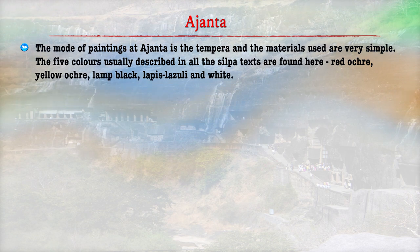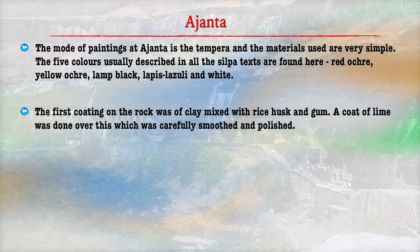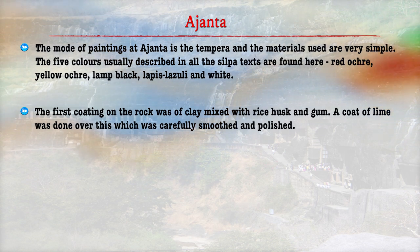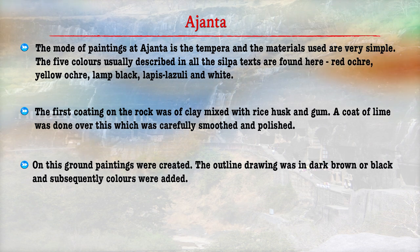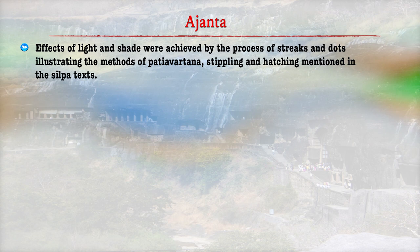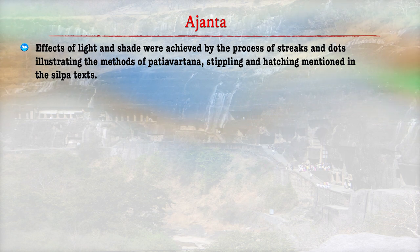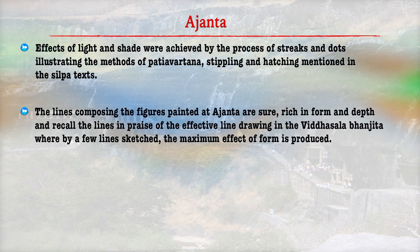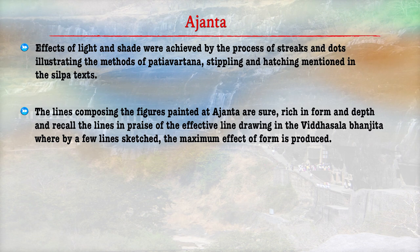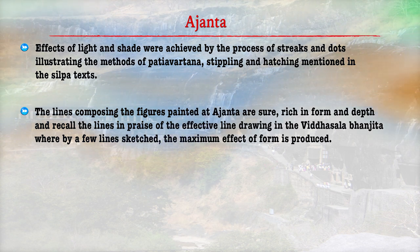The first coating on the rock was of clay mixed with rice husk and gum. A coat of lime was done over this, carefully smoothened and polished, on which the paintings were created. The outline drawing was in dark brown or black, and subsequently colours were added. Effects of light and shade were achieved by the process of dots, illustrating the methods of painting mentioned in various texts. The lines composing the figures painted at Ajanta are rich in form and depth, recalling the lines in praise of effective line drawing in the Vedshala, where painters were given guidance and training.